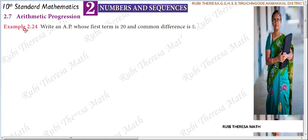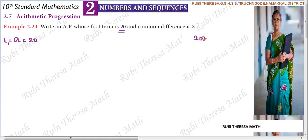Arithmetic progression. Next example 2.24 - write an AP. They have asked you to form the sequence. The first term is represented as A, the initial term. The common difference is 8. Each term is increased by 8 to get the next term.